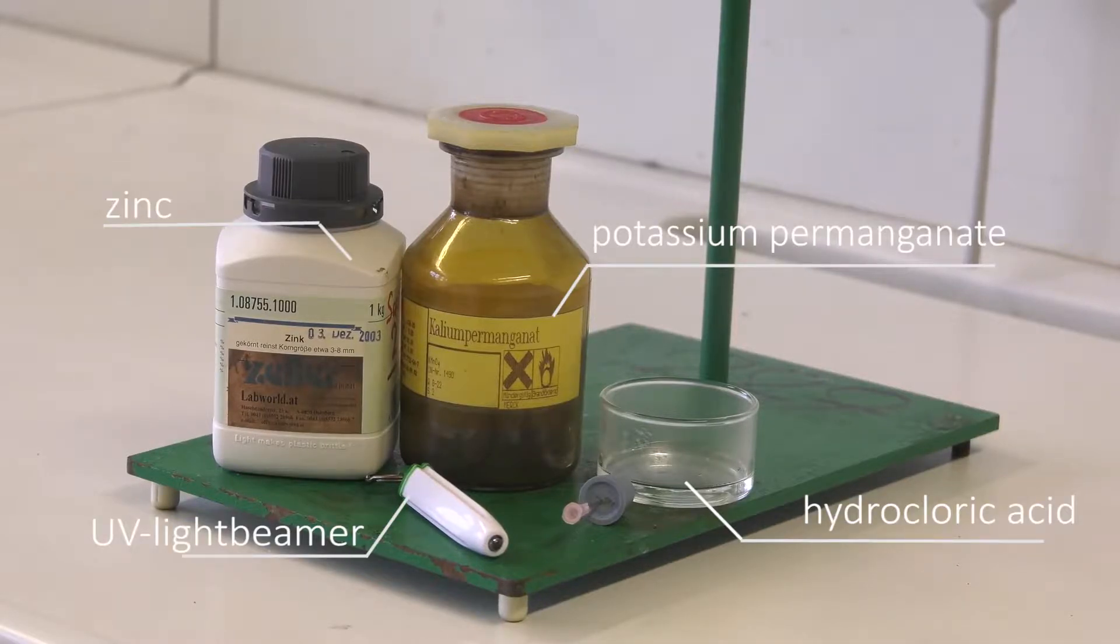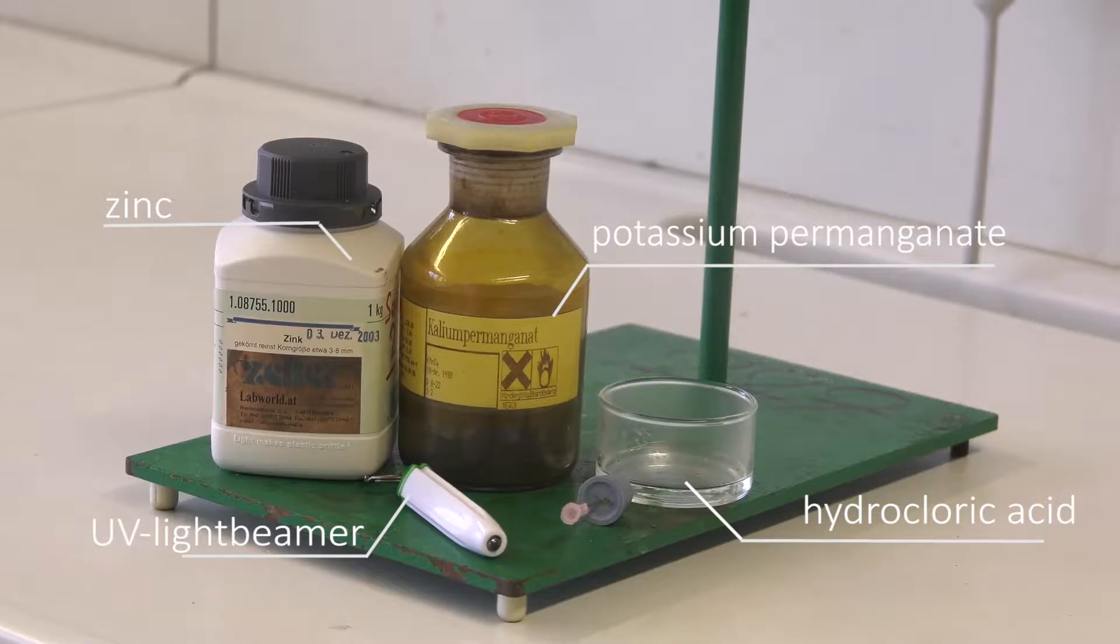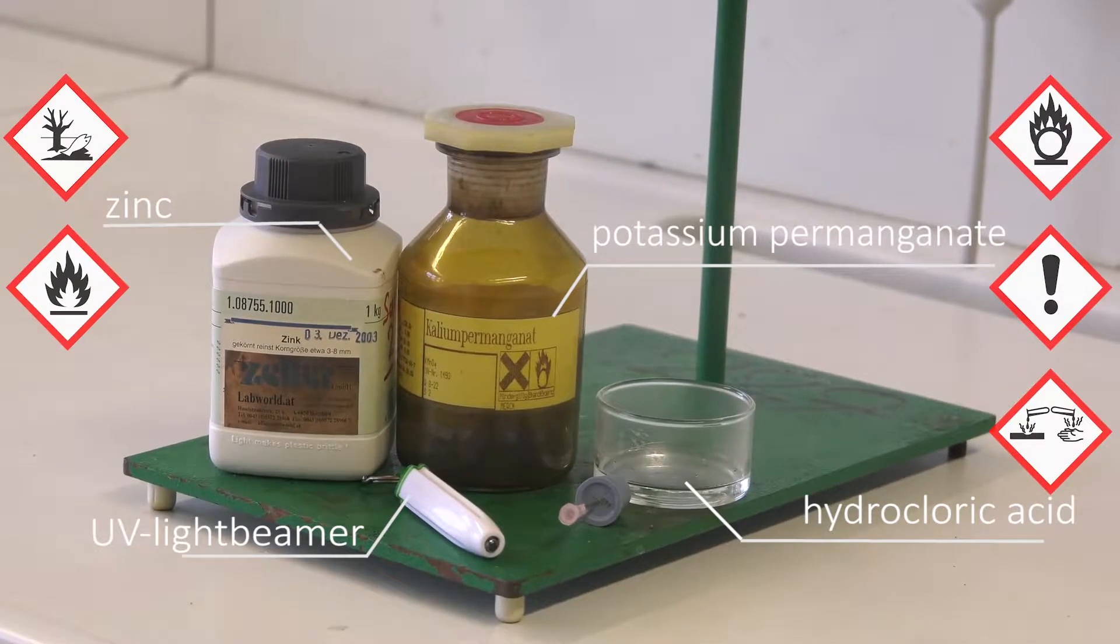For the reaction between chlorine and hydrogen we need zinc, hydrochloric acid, potassium permanganate and aluminium foil.